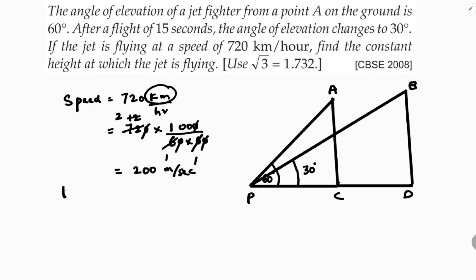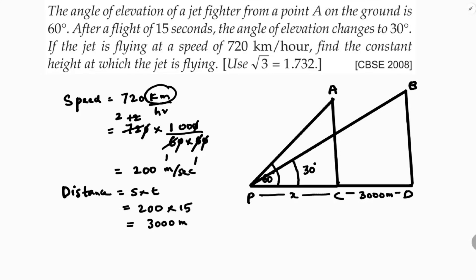I need to find the CD distance. Distance equals speed multiplied by time. Speed is 200 meters per second, and time is 15 seconds, so distance equals 200 × 15 = 3000 meters. The jet covered 3000 meters in 15 seconds. I'll consider the unknown horizontal distance as x, and I need to find the height H.